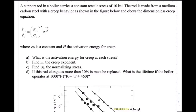This is Homework number four, problem three. We are talking about the supporting rod, and it has a tensile stress of 10 KSI. There's a constitutive law regarding the creep strain, with the assumption that sigma zero is going to be constant. We have some values of H, which is the activation energy for creep, and the following questions ask for the activation energy at each stress, where we have to find H values in terms of different stress values.